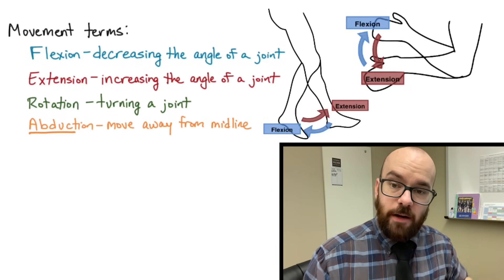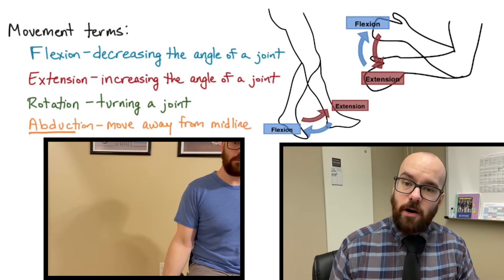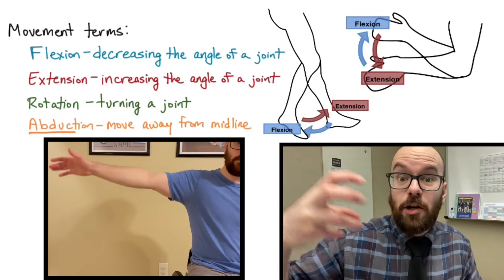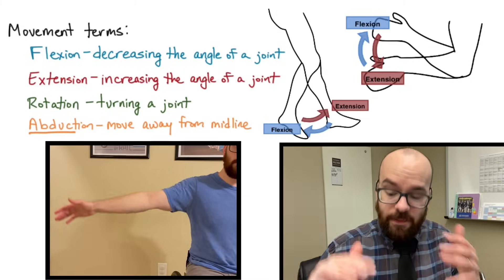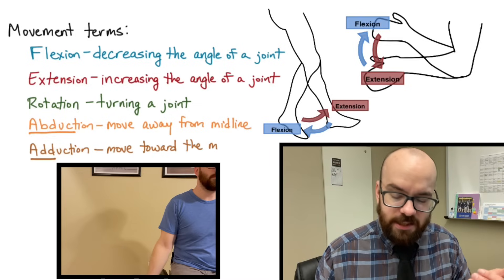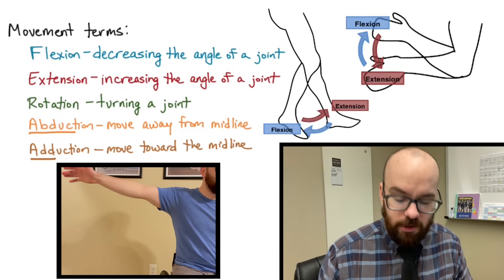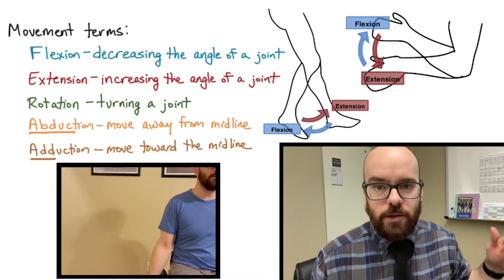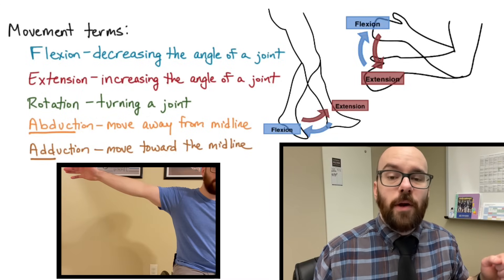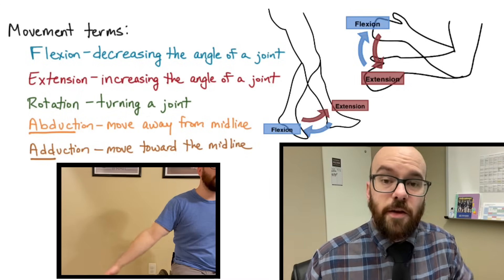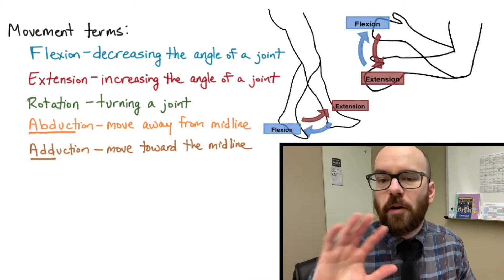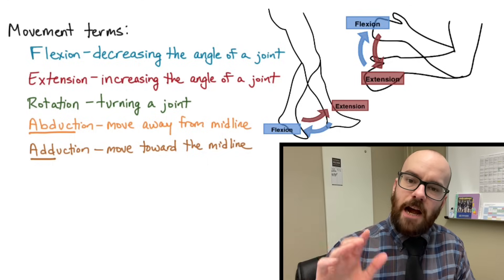Next we have abduction and adduction. Abduction is movement away from the midline — to abduct my arm I take it and move it away from my midline, like being abducted by aliens, taken away from something. The opposite is adduction — think of addition, adding it back to your torso. When I adduct my arm I return it back to my side or back to the midline.